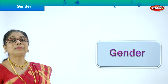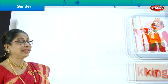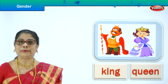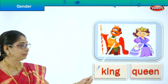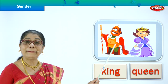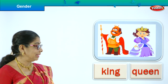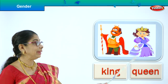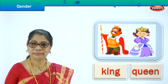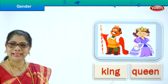Let's look at the first picture. Look what you have here — king and queen. King is masculine gender, queen is feminine. King and queen rule the land. Will you forget? King, queen.